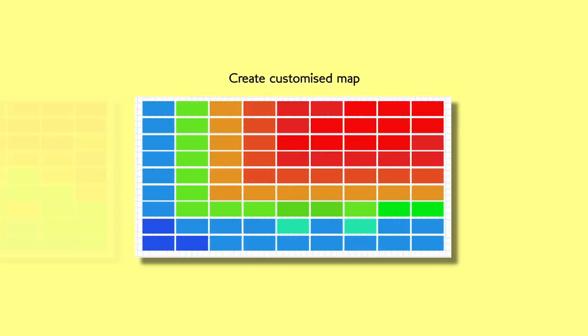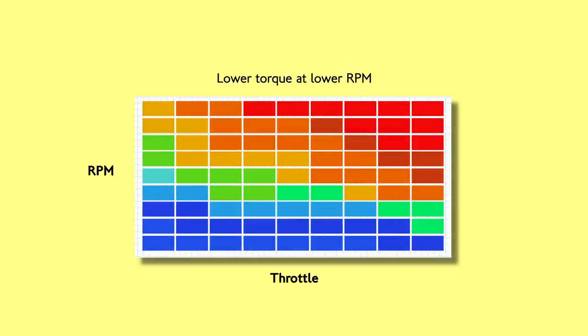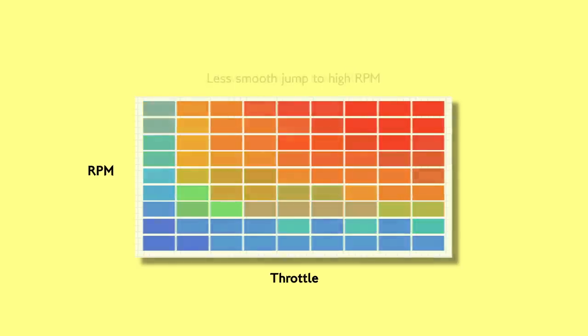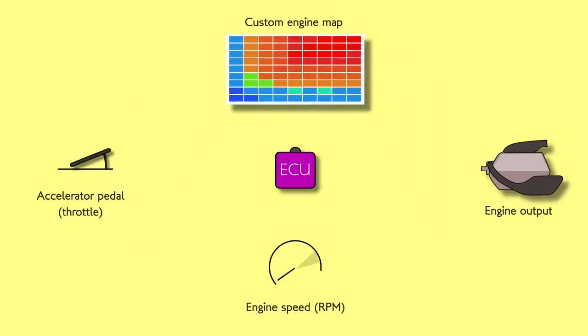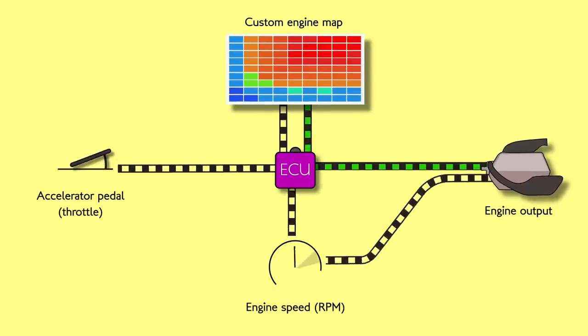For example, we might want to lower the torque at lower revs like this, or we may want to make the jump from low to high torque more dramatic. The idea behind these maps is that we're going to demand from the engine a certain amount of torque or power given certain scenarios.